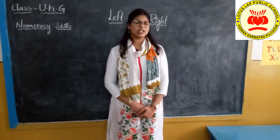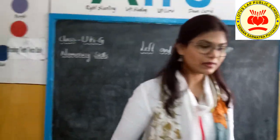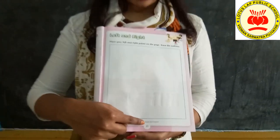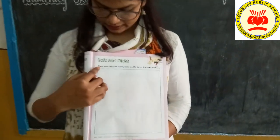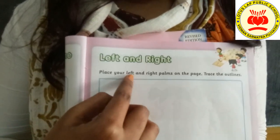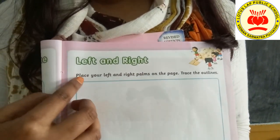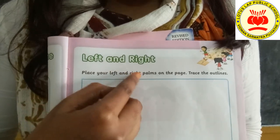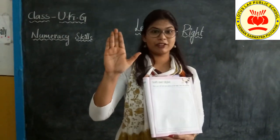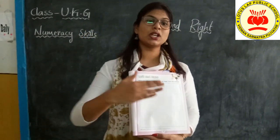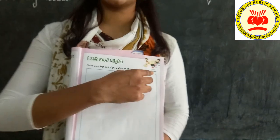So children, let us see what is given. See page number 13 — left and right. You can see what is given here. First read this: place your left and right palms on the page. Palm means this part of your hand. You have to put your left and right palms on the page and trace the outlines. You might have tried this before.